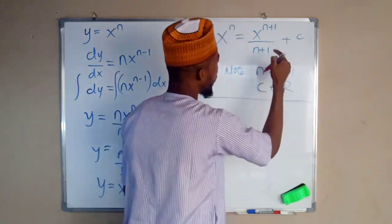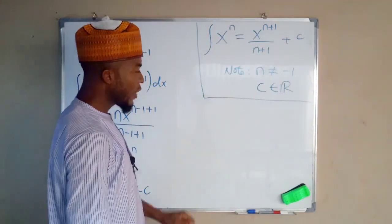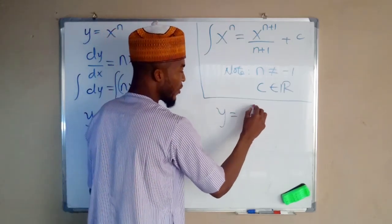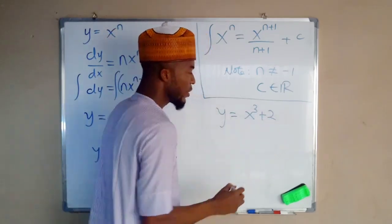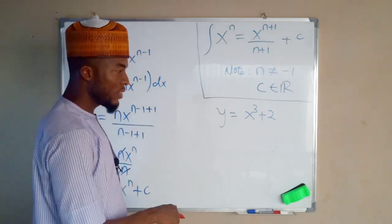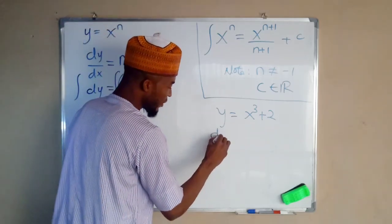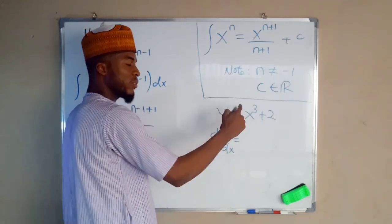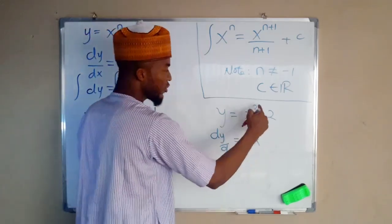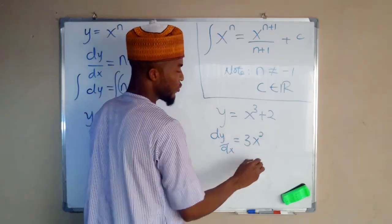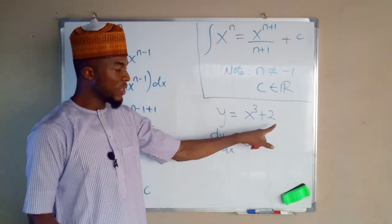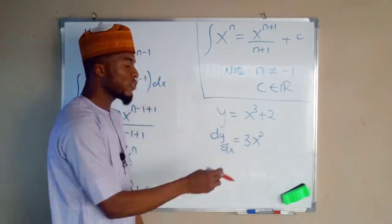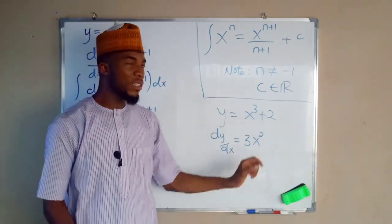Now let us look at another example. Suppose y equals x to the power of 3 plus 2. First of all let us differentiate this function and see the result. By differentiating with respect to x, the exponent comes down — 3 times x, then you subtract 1 from 2, giving 3x squared. The derivative of the constant term 2 is zero. So dy/dx = 3x squared. Now let us integrate this function to see whether we are going to obtain the initial function.